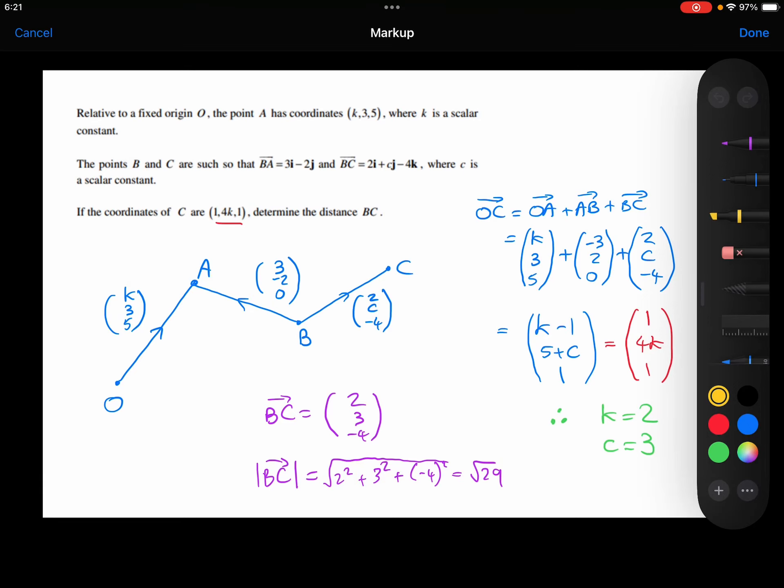Relative to a fixed origin O, the point A has coordinates (k, 3, 5), where k is a scalar constant. As you can see, I've drawn this on my little diagram here. I've written that down as a position vector from the origin (k, 3, 5).